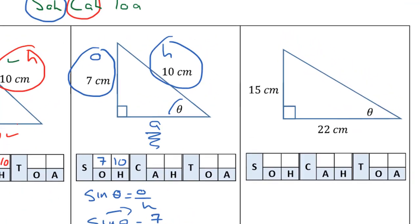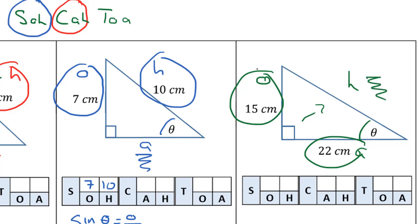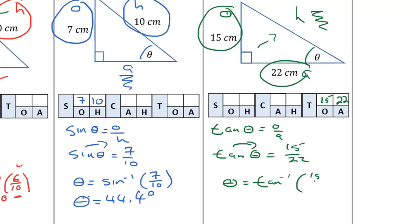The last triangle — the angle is down at the bottom, so the opposite is over here, adjacent is here, and hypotenuse is always on that side. In this case we are given the opposite and the adjacent and we don't have any information about the hypotenuse, so we have to find a trig ratio that combines opposite and adjacent — the only one left is tangent. The opposite is 15 and the adjacent is 22. So tan of theta equals opposite over adjacent, which gives us 15 over 22. Moving tan to the other side, theta equals the tan inverse of 15 over 22.